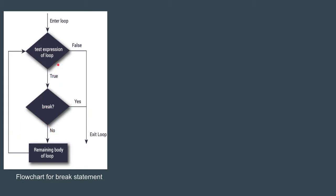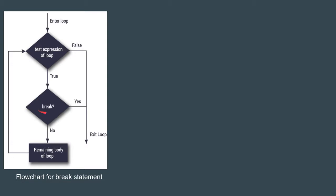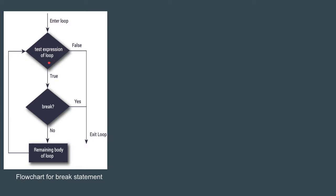Now this is the flowchart for a break statement. The control of the program enters the loop and the test expression is evaluated. If the test expression turns out to be false, the program exits the loop. If it is true, it checks whether there is a break statement — if a break is encountered, the loop is immediately exited; otherwise, the remaining body of the loop continues to execute and the control shifts back to the test expression.